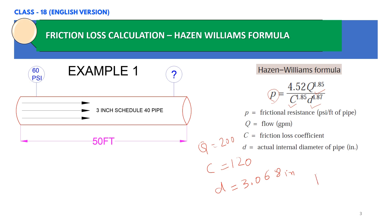So P equals 4.52 times 200 to the power 1.85, divided by 120 to the power 1.85 times 3.068 to the power 4.87. We get approximately 0.049 PSI per foot of pipe. So the friction loss per foot of pipe is 0.049 PSI. The total length of the pipe is 50 feet.